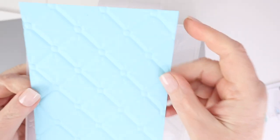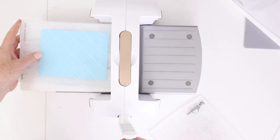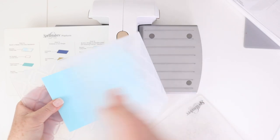Do you love the look of 3D embossing folders but struggle to find the right sandwich to either let the sandwich pass through the machine or get a good impression?